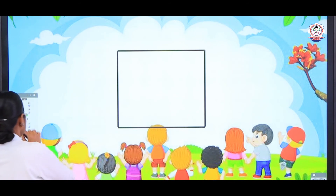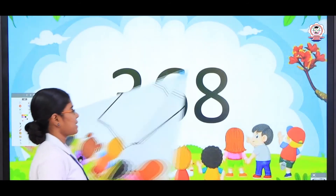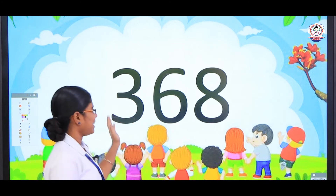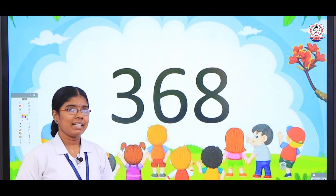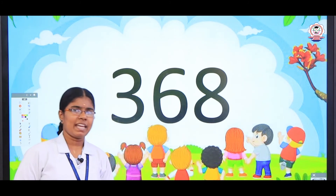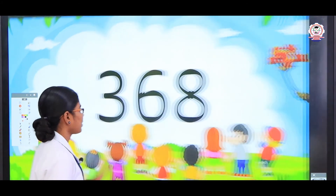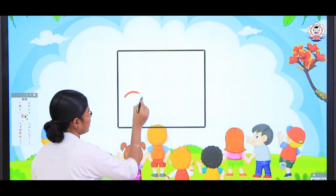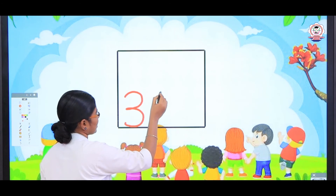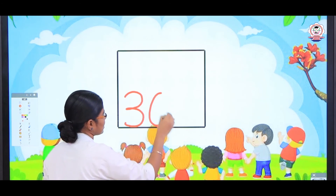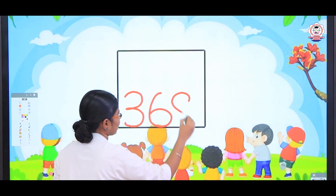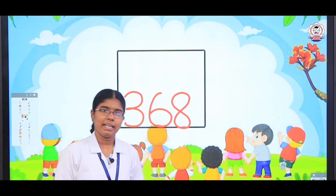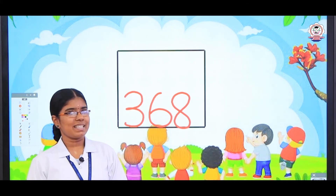The next number is? What is the next number, Arjun? Yes, 3, 6, 8 — 368. You are correct, Arjun. So let's write this number. 3, 6, 8 — 3, 6, 8 — 368.